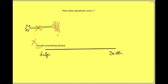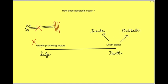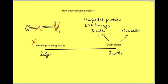Another way cells will die is when the cell receives a death signal. The absence of growth-promoting factors or the presence of a death signal can both lead to apoptosis. This death signal may come from inside the cell — when a cell is not formed properly or there is DNA damage, damage to the endoplasmic reticulum, mitochondria, or accumulation of misfolded proteins — meaning that cell is fundamentally not functioning properly.